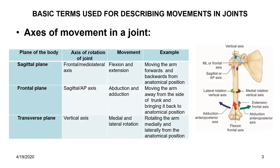In the previous slide, you have seen the three planes of the body: the sagittal plane, the frontal plane, and the transverse plane. The movements along these planes correspond to the axis of rotation of a joint. The sagittal plane corresponds to the frontal or medial-lateral axis, as seen in this picture of the shoulder joint.